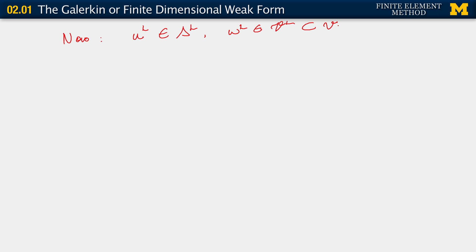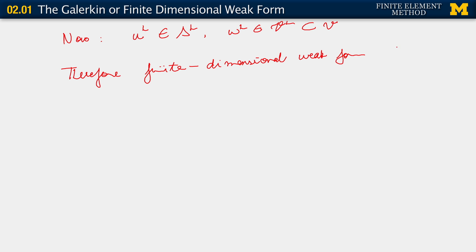But that is the nature of our approximation. Therefore, the finite dimensional weak form does not imply the infinite dimensional strong form. In general.